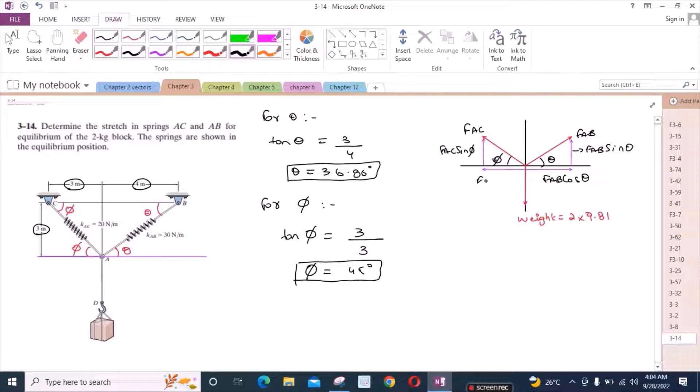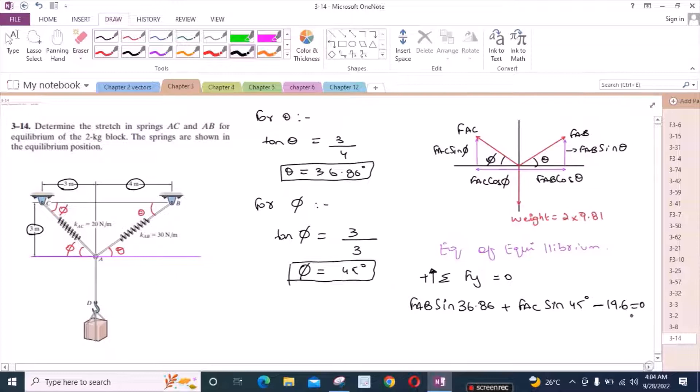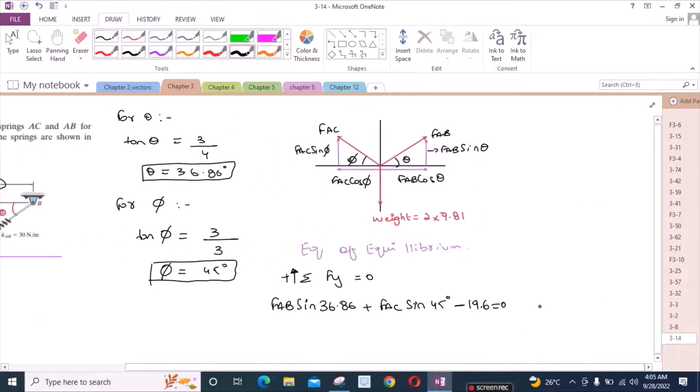Now we can apply the equations of equilibrium. We have sum of the forces in y direction equal to 0. I am considering up direction as positive. So we have FAB sin theta, and the theta is 36.86 degrees, plus FAC sin phi, and phi is 45 degrees, minus this weight which is 19.6 newtons equal to 0. This is our equation. Let's call this equation 1.